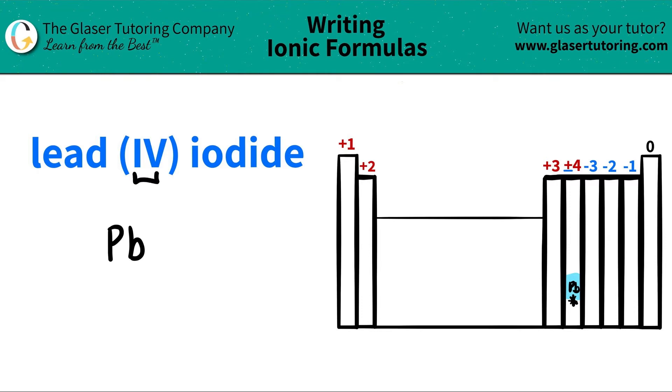Now in this case, since this Roman numeral is a four, it does go with the trend, but it won't happen all the time. So just watch out for that. So lead Pb would be a plus four. Metals are always positive charges.